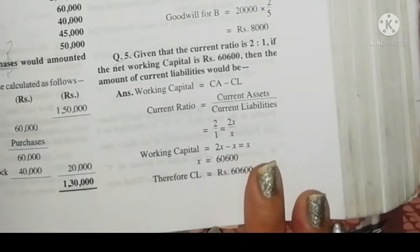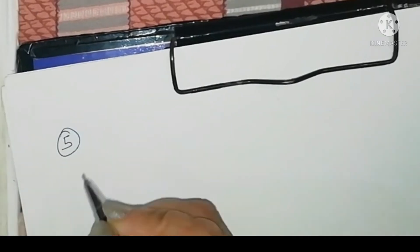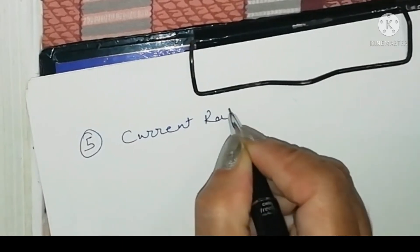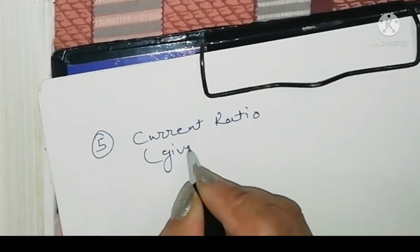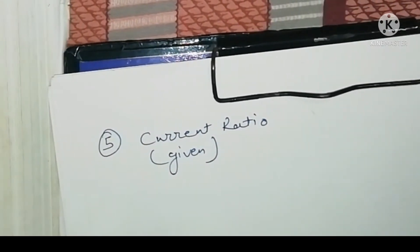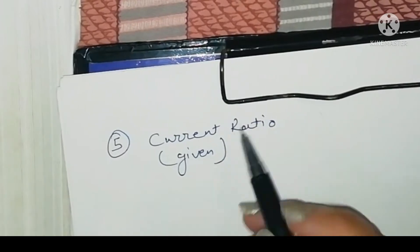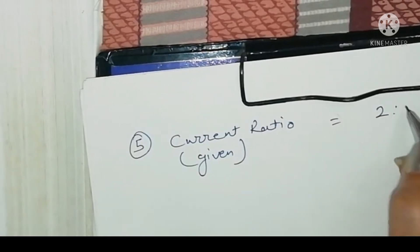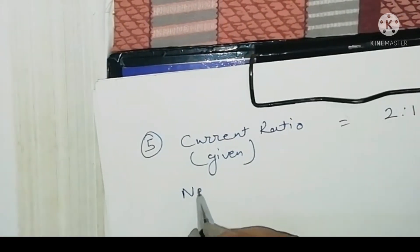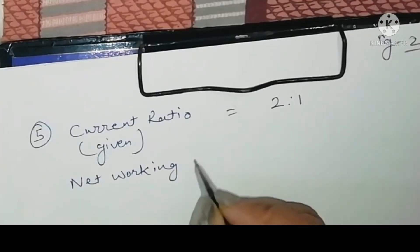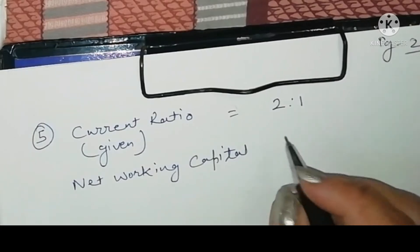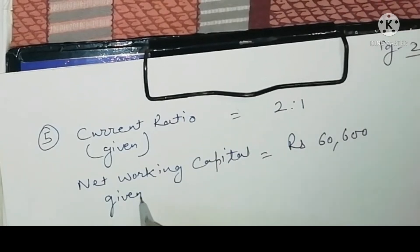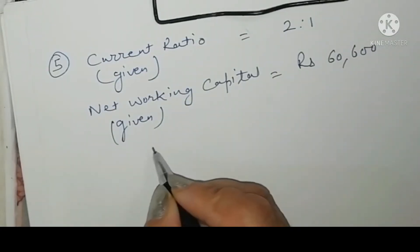In this question we are given the current ratio that is 2:1 and the net working capital figure is also given as 60,600. We have to find out the value of current liabilities.